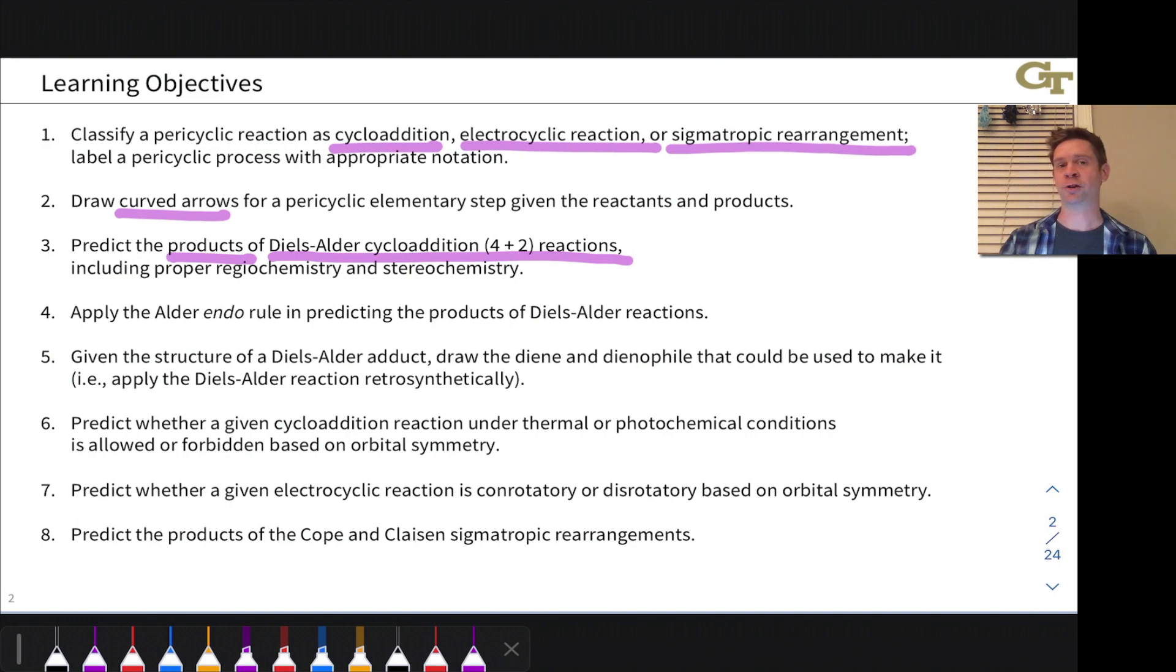We'll learn about what is probably the most practically important pericyclic reaction, the Diels-Alder or 4+2 cycloaddition. And we'll learn how to predict the products of Diels-Alder reactions, including their proper constitution or connectivity, which is an issue of what we'd call regiochemistry.